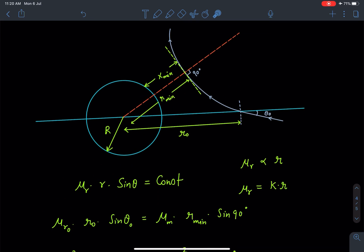As you can see here, when the light ray enters at angle θ₀, it follows a certain trajectory. When the distance is minimum, that angle is 90 degrees as we discussed earlier.